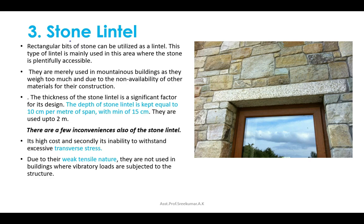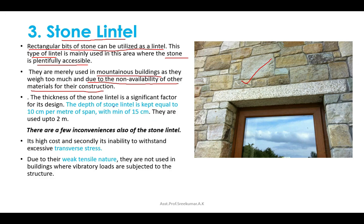Next is stone lintels. Lintels are supportive structures across an opening like a door or window. In stone lintels, rectangular blocks of stone are used, mainly in areas where stone is plentifully accessible, such as mountainous buildings. The depth of a stone lintel is kept equal to 10 cm per meter of span, with a minimum depth of 15 cm. Stone lintels are used up to a span of 2 meters.